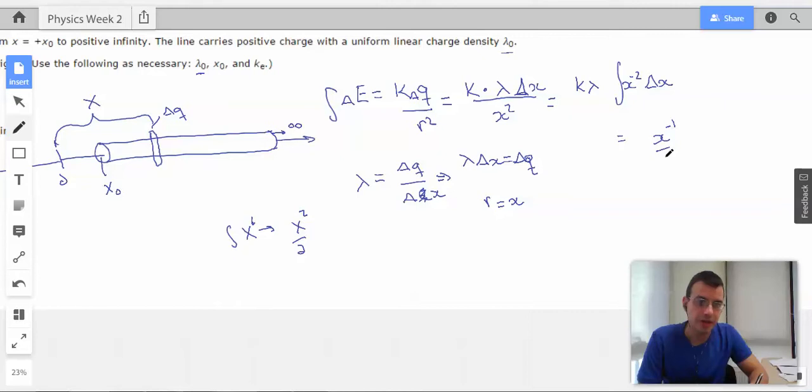So negative 2 plus 1 is negative 1. And then we divide by negative 1. Then we still have our constants, k and lambda. And then this will be integrated from one point to the other. Now the points that we're going to integrate from is we're going to start at x naught. We're going to go to infinity. Yeah, that makes sense. Because the half infinite, semi-infinite rod starts at x naught and it goes to infinity.